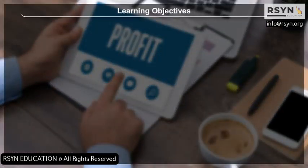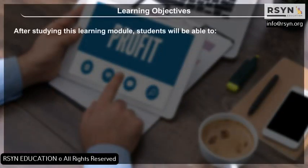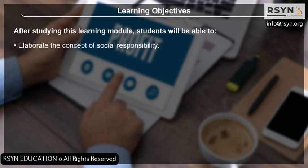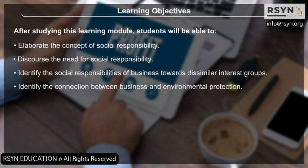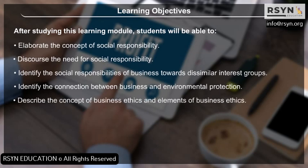Learning Objectives: After studying this learning module, students will be able to elaborate the concept of social responsibility, discourse the need for social responsibility, identify the social responsibilities of business towards dissimilar interest groups, identify the connection between business and environmental protection, and describe the concept of business ethics and elements of business ethics.